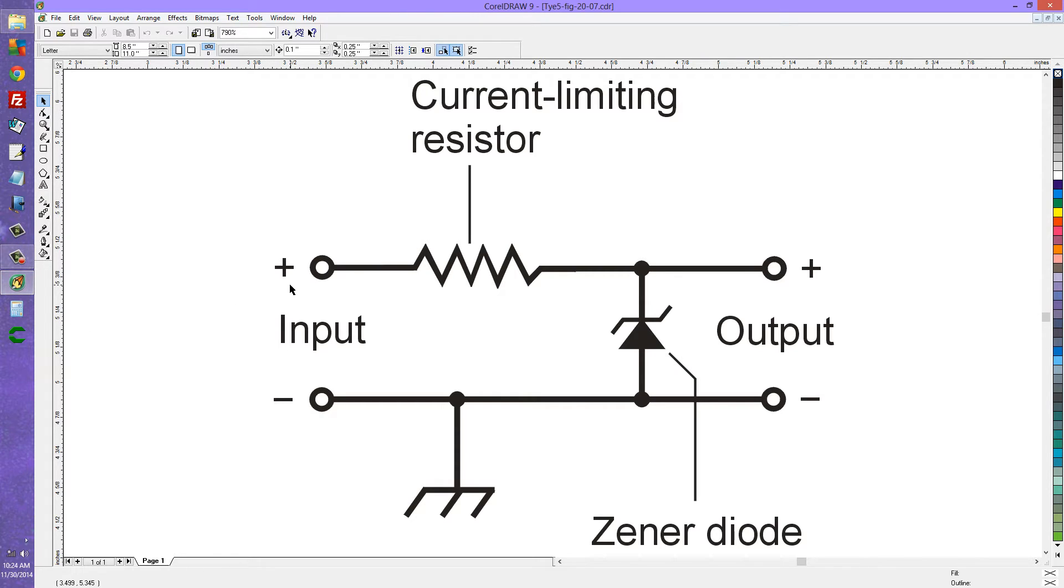You have a DC input right here that's unregulated. You run it through a current limiting resistor to protect the Zener diode against overcurrent and then you have your Zener diode basically right here.